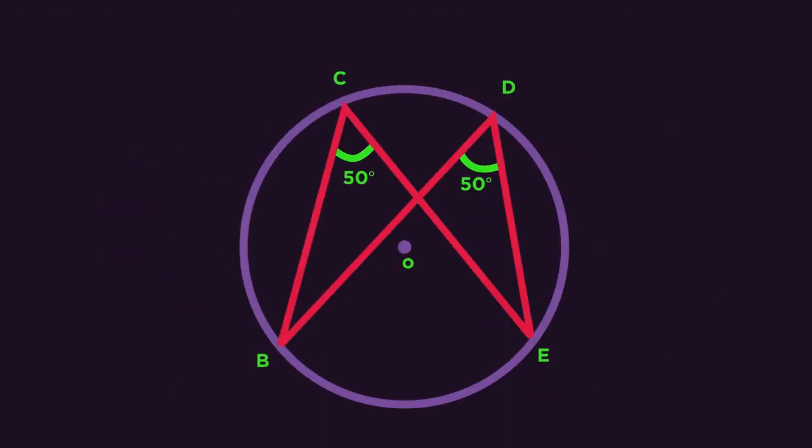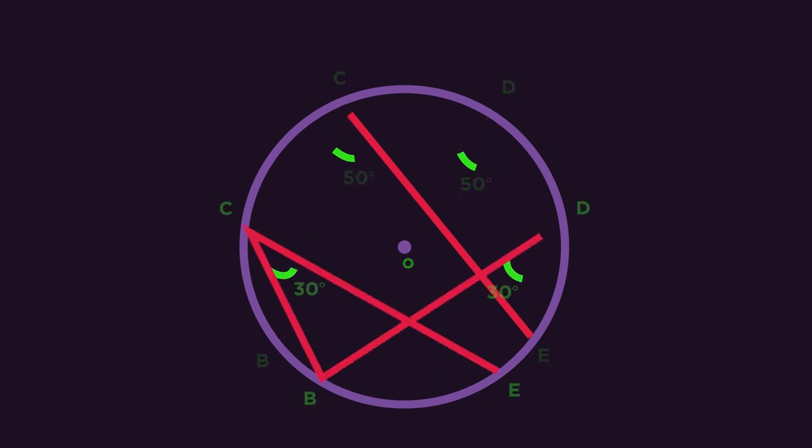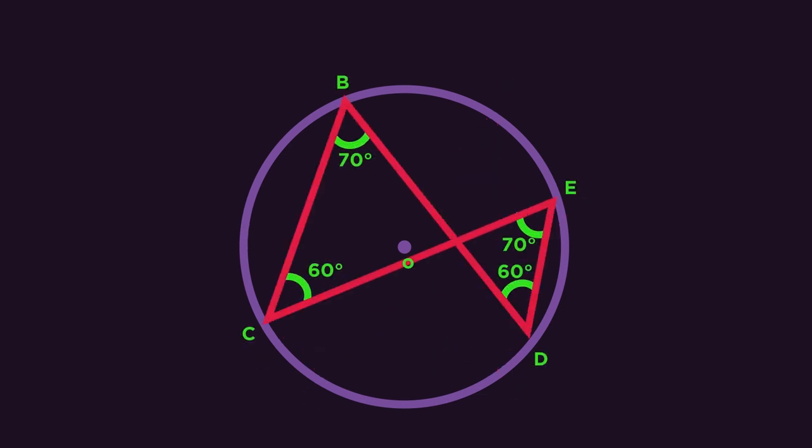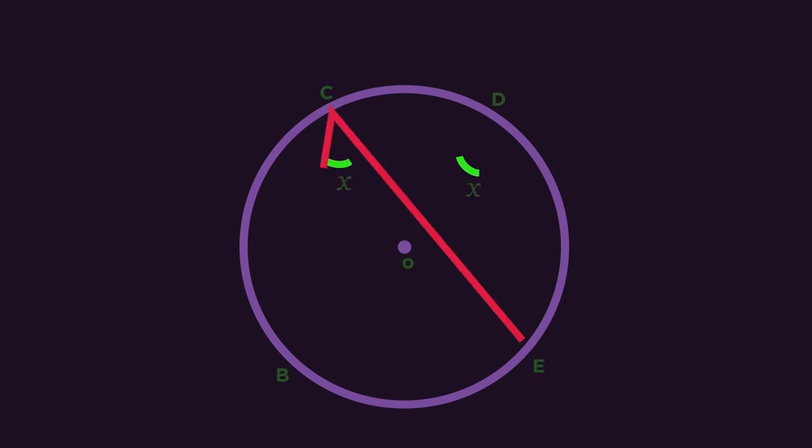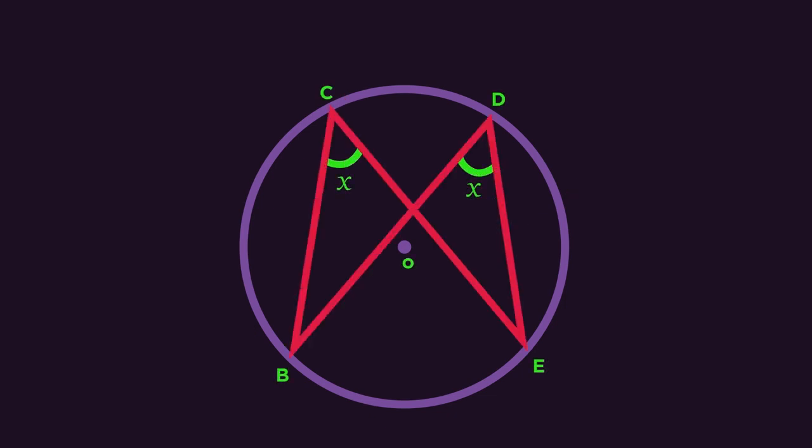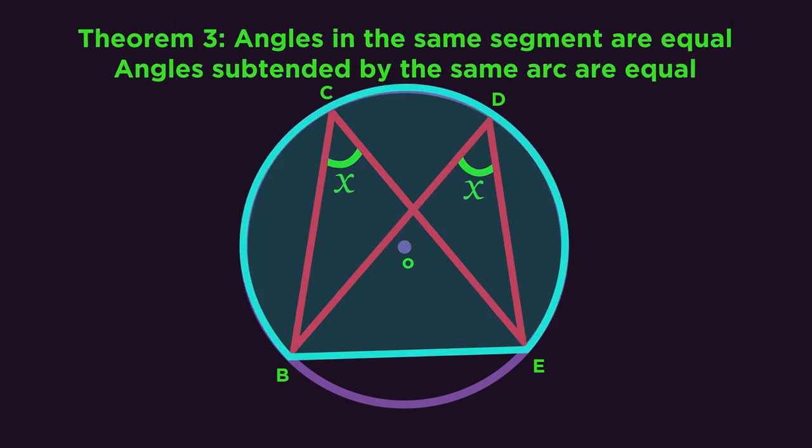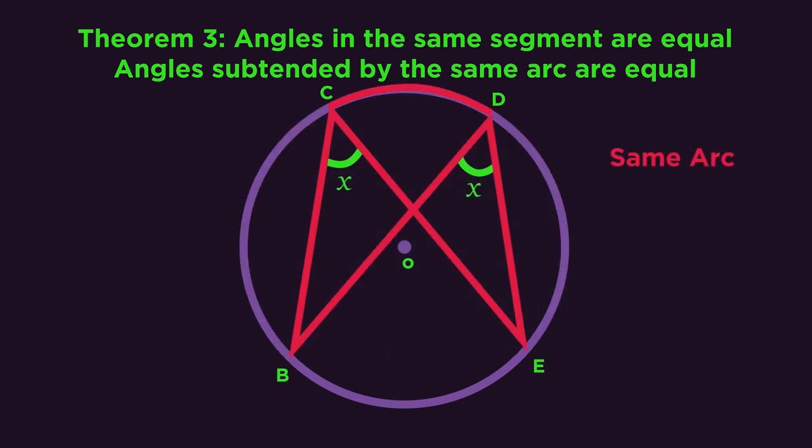So here's the next one. What do you notice about the angles? We describe this one as angles in the same segment are equal. So these angles are in the major segment. But we can also describe this theorem as angles subtended by the same arc are equal.